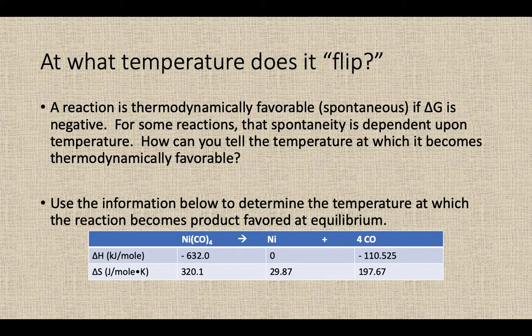So you might remember looking at those four situations. How do you know when a reaction is going to be thermodynamically favorable or not? And calculating that G. And as long as your G value was negative, it would be thermodynamically favorable. Some of those reactions under those four situations, the spontaneity was dependent upon the temperature. So how can you tell at which temperature it becomes thermodynamically favorable? So let's look at this reaction here, this nickel carbon monoxide compound. They're turning into just nickel, the element, and carbon monoxide, a decomposition reaction.